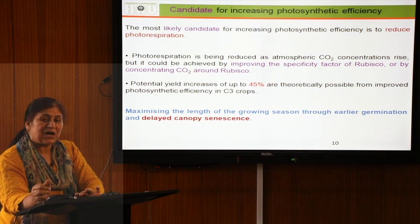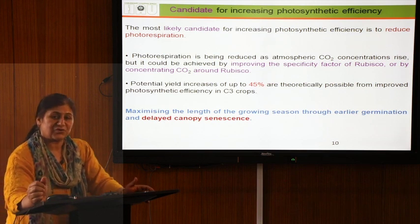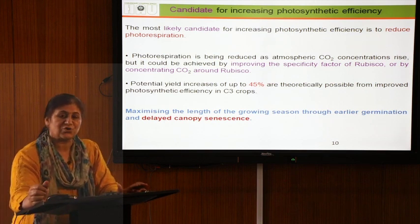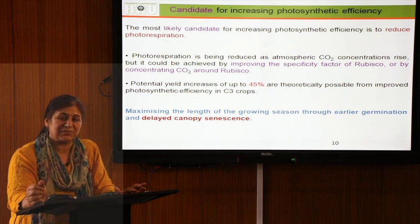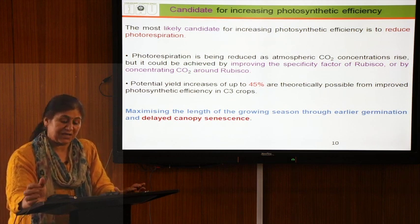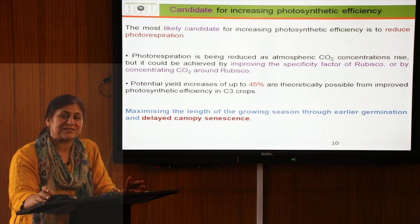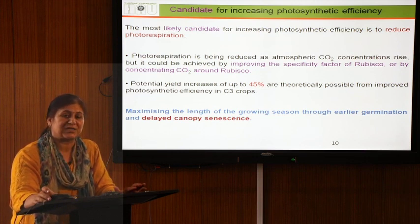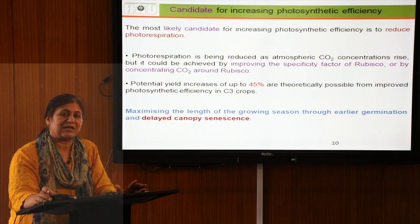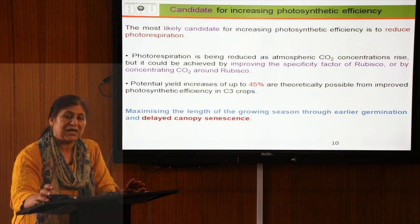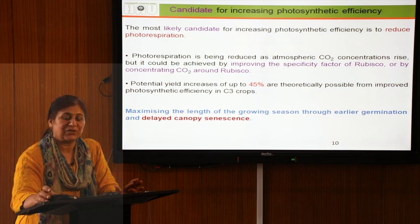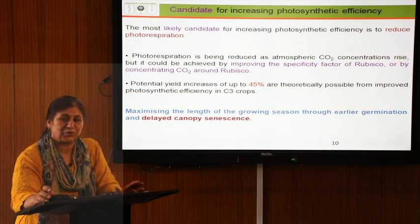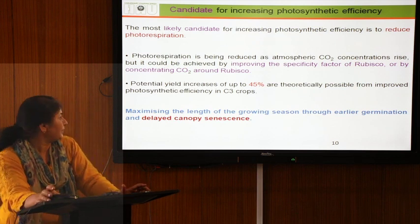SBPase has been overexpressed in a number of laboratories, and it has been found that around a 20% increase in photosynthetic capacity was achieved. So far, we have learned that photorespiration can be reduced, the CO2 concentrating mechanism can be enhanced, and RuBP regeneration — achievable through SBPase — is an important target. These three areas are key, but more remains to be learned.